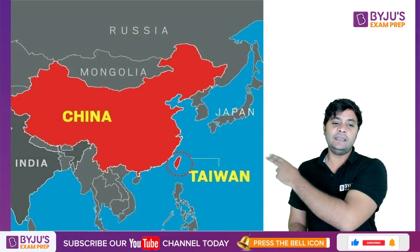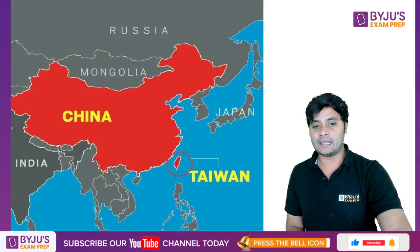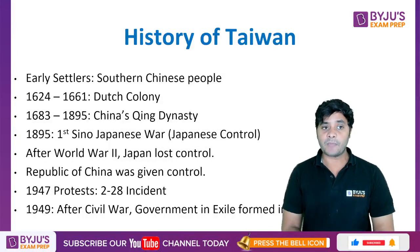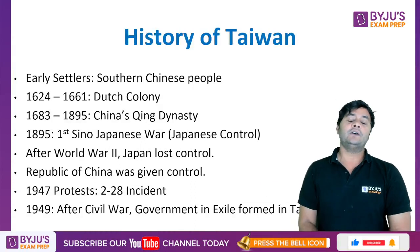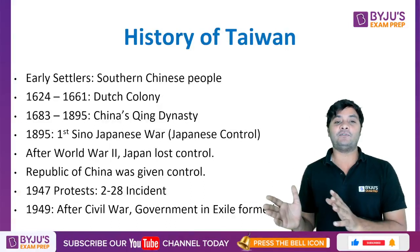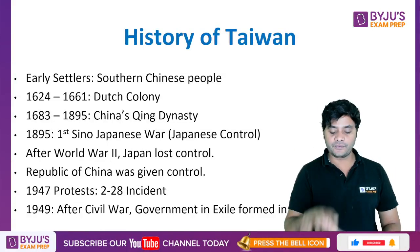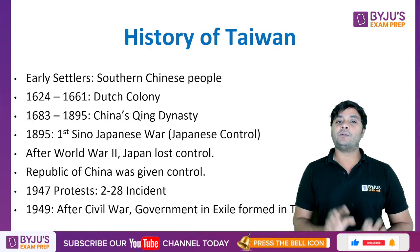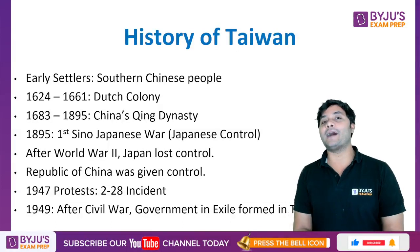Taiwan is located near the southern boundary of China, and the first settlers in the Taiwan region were from southern China. In terms of the timeline, from 1624 to 1661, the Dutch colony was in complete control of the region. From 1683 to 1895, it was under the control of China's Qing Dynasty — and this is the period China refers to when stating its claim over Taiwan.